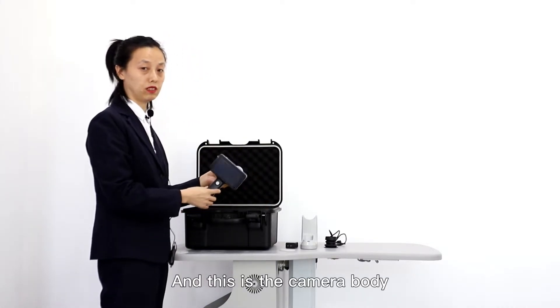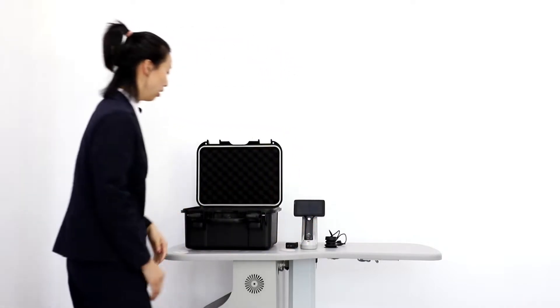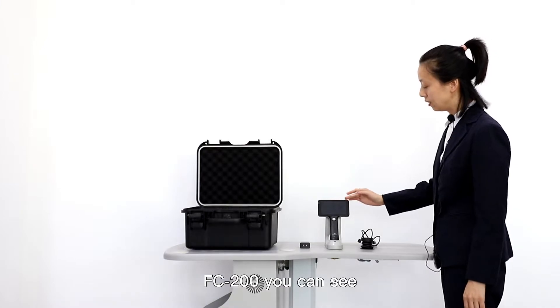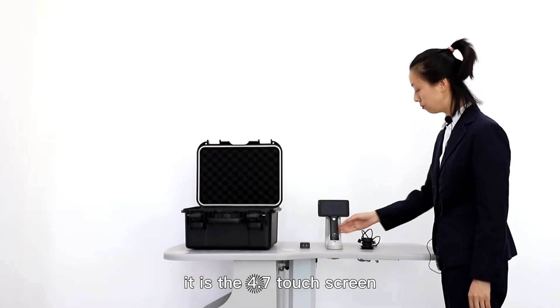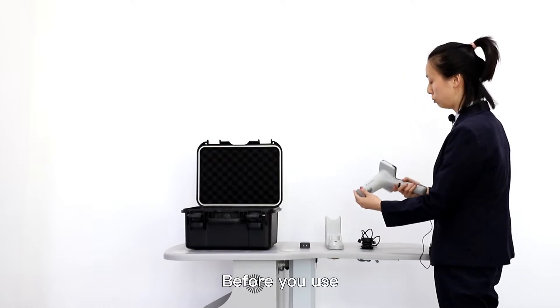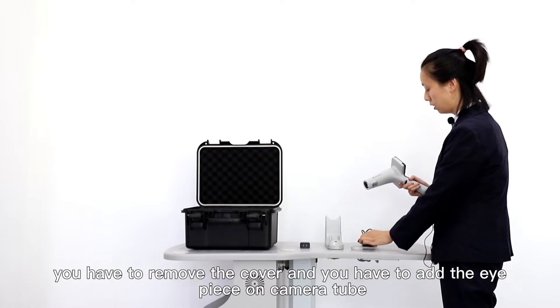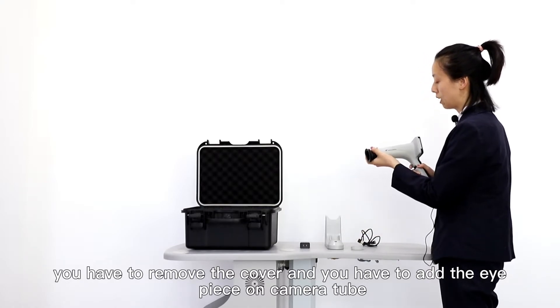This is the camera body. The Fender's camera FC200 has a 4.7 inch touch screen. Before you use it, you have to remove the cover and add the eyepiece on the camera.